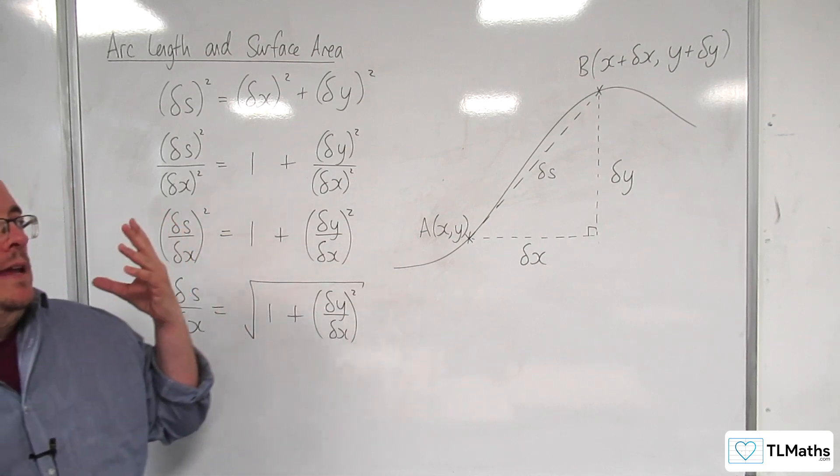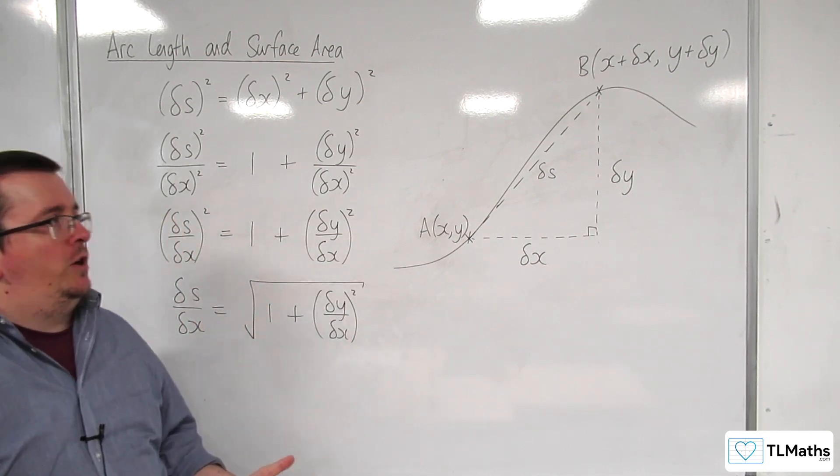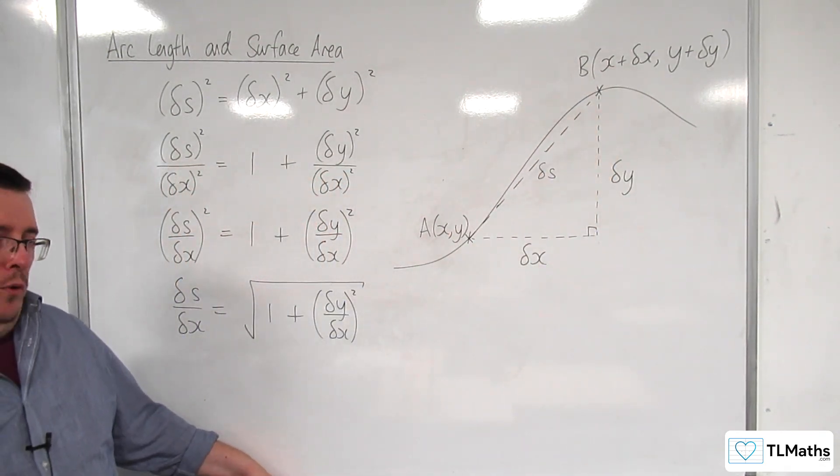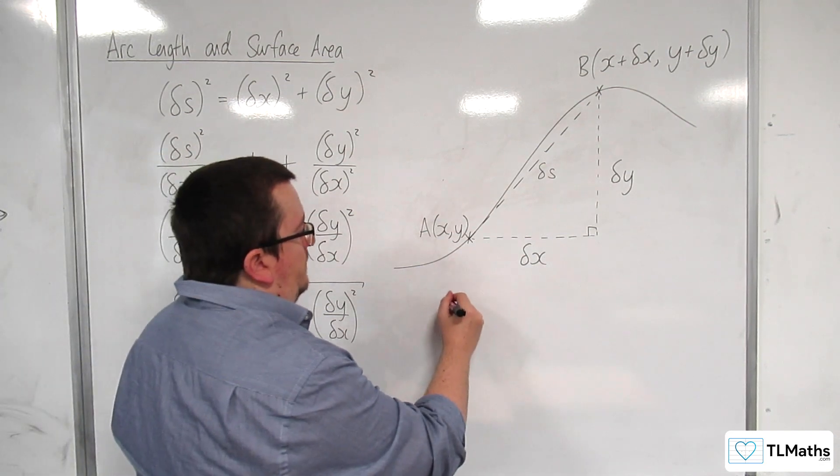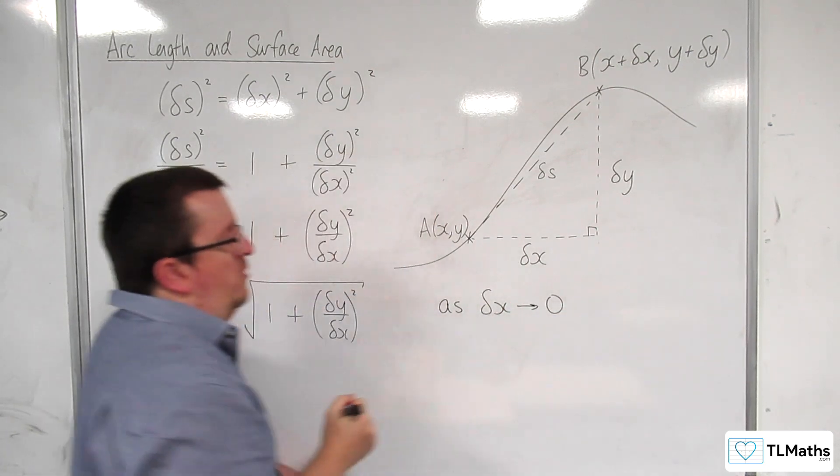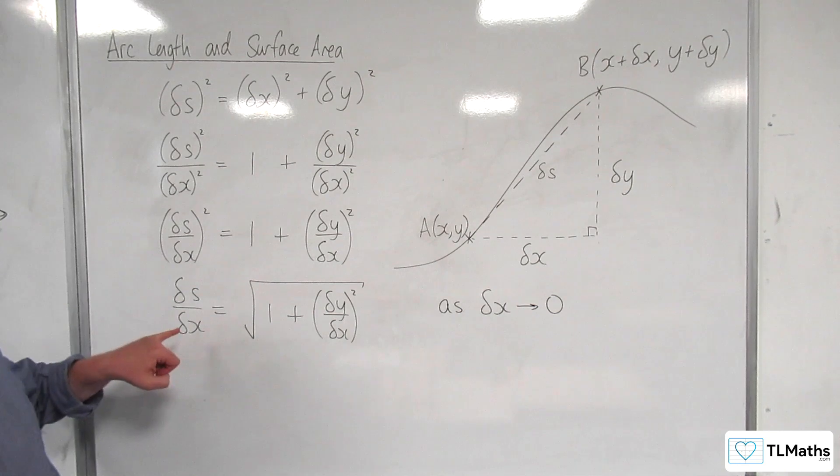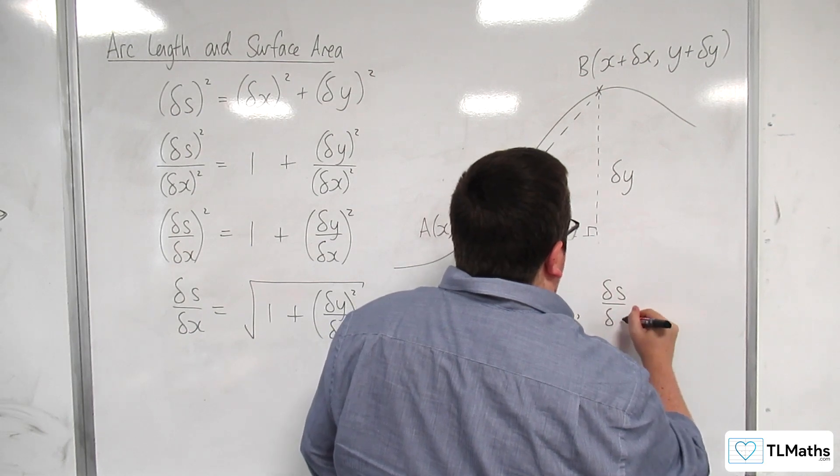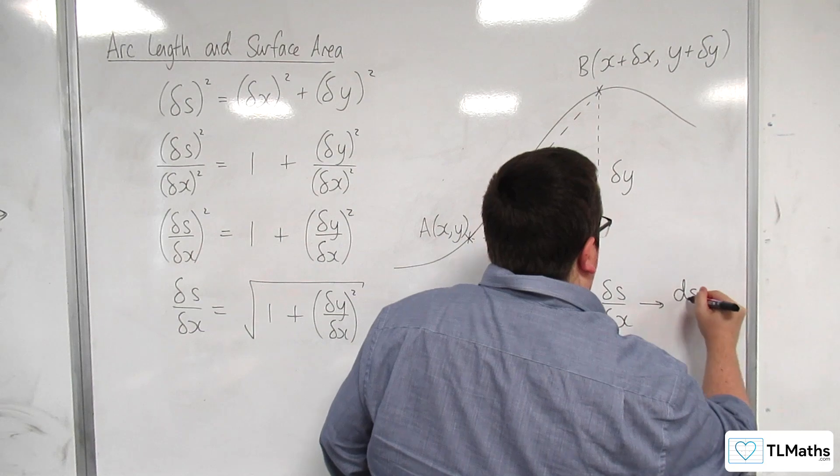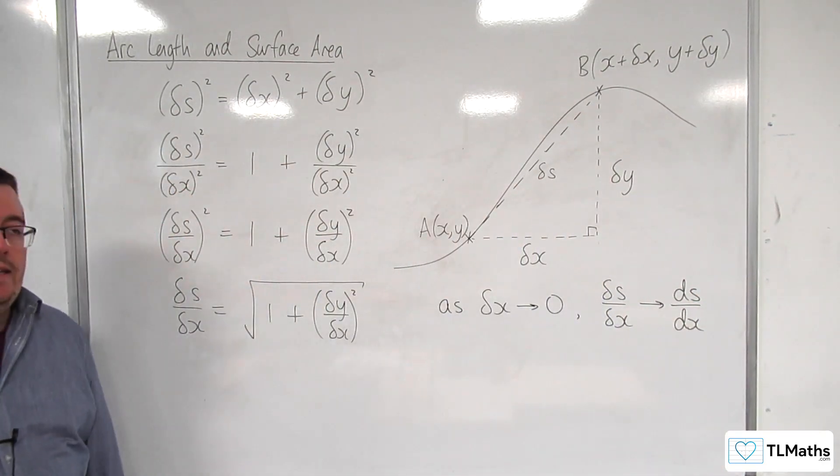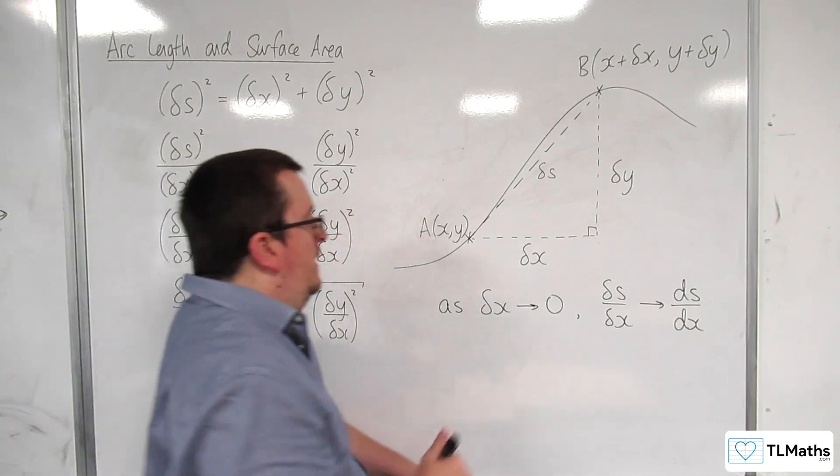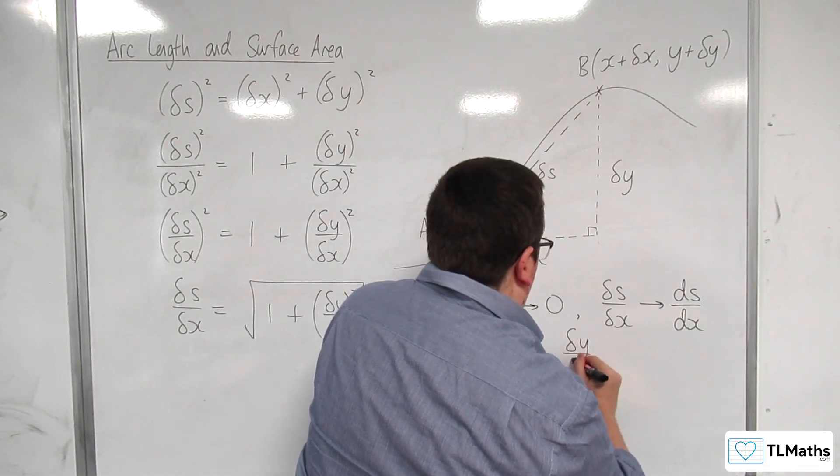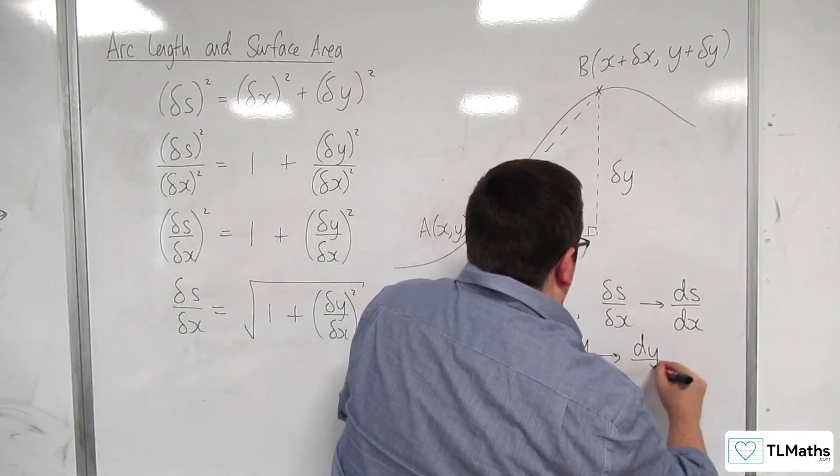Now what we want to happen is in order to get a better approximation for our hypotenuse to be equal to the length of the curve, I would need delta x to get smaller and smaller and smaller. So I can say that as delta x tends to 0 what's going to happen is that delta S over delta x is going to get closer and closer to being ds over dx. It's going to approach the gradient of the curve at that point. And delta y over delta x will also approach dy by dx.